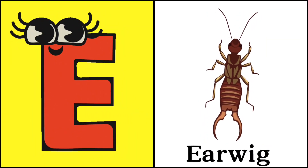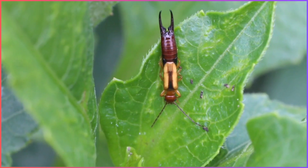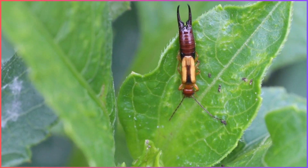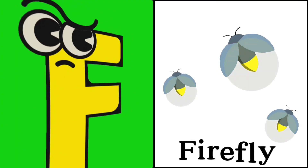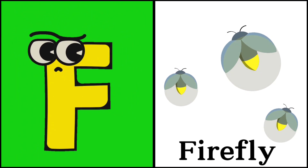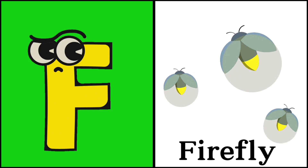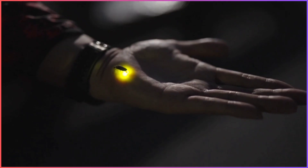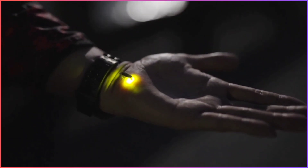E for Earwig. This is an Earwig. F for Firefly. This is a Firefly.